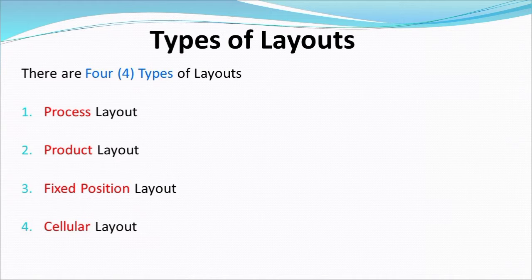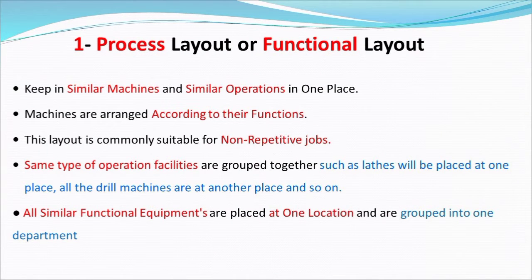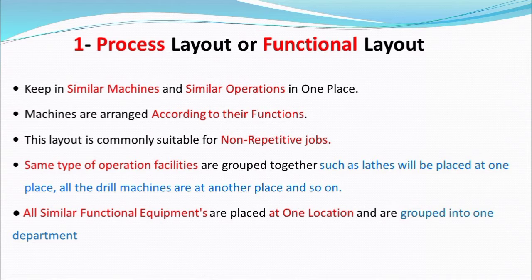First, we discuss process layout, also known as functional layout. Keeping similar machines and similar operations in one place is called a process layout. In process layout, machines are arranged according to their functions. This layout is commonly suitable for non-repetitive jobs. Such facilities are grouped together — for example, all lathe machines placed at one place, all drill machines at another place, and so on. All similar functional equipment placed at one location and grouped into one department is known as the process layout or functional layout.